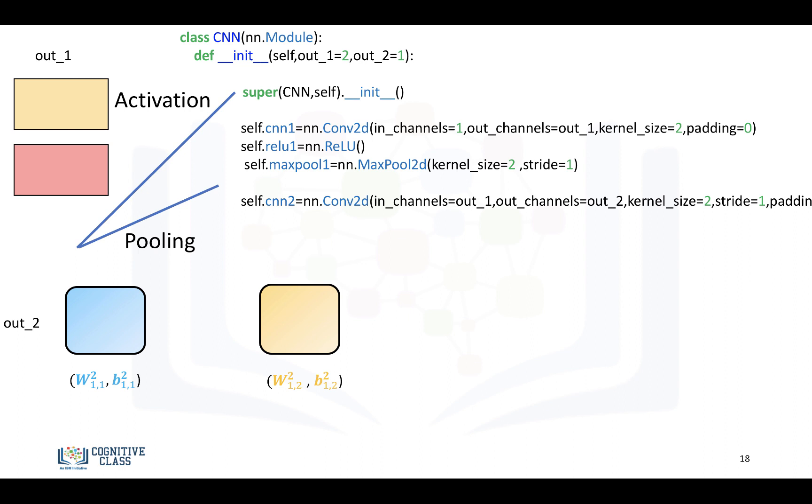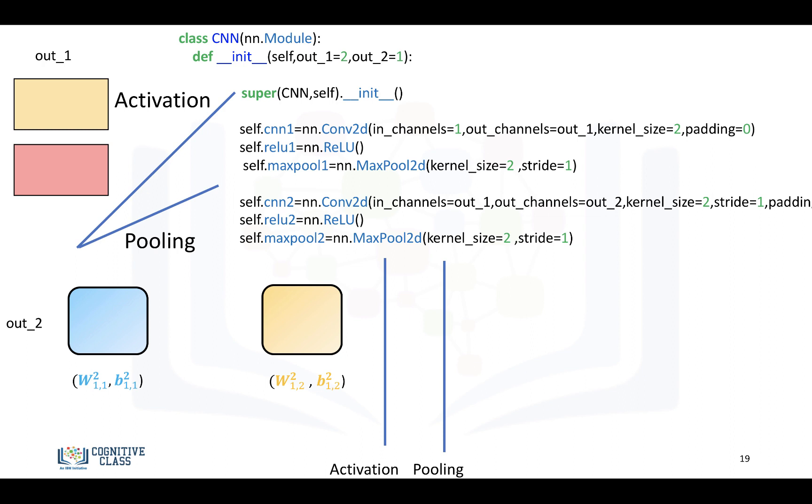And our number of outputs for our second layer will be one. Then we'll add a ReLU, then we'll add a ReLU and max pooling layer.